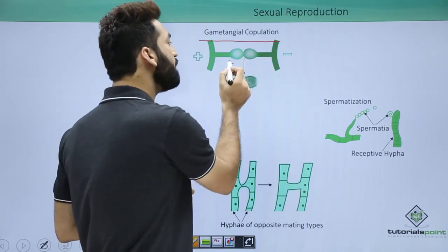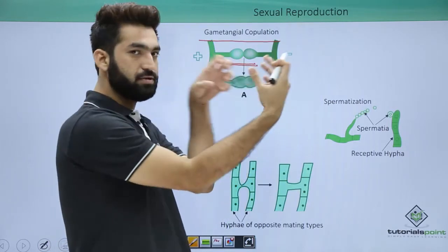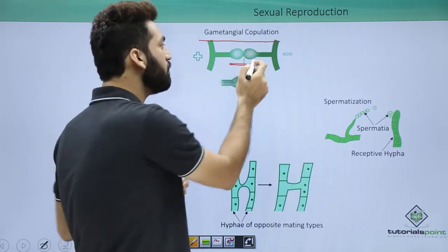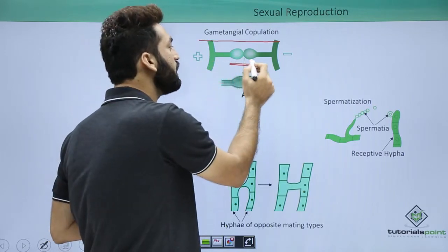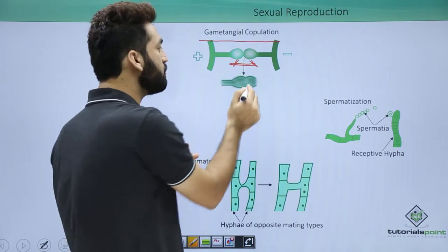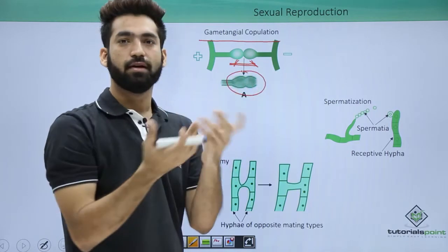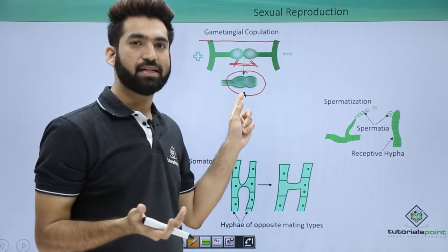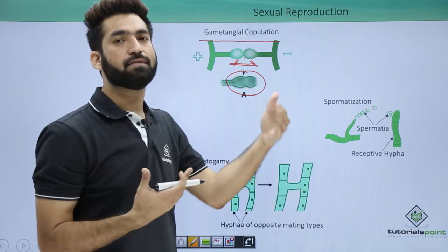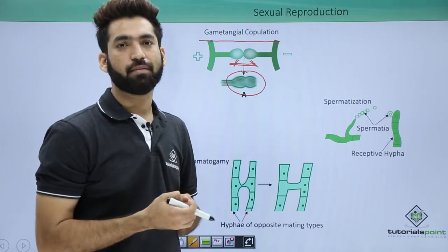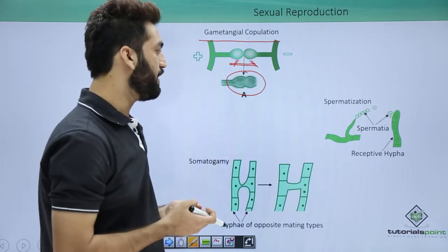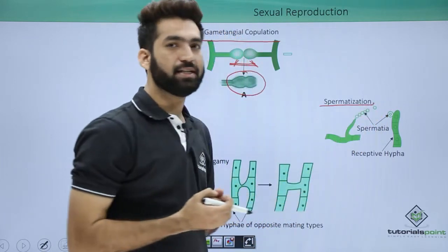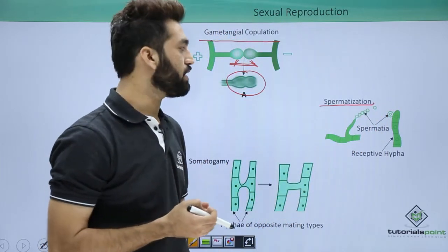The third method is called gametangial copulation. Both gametes come close together, and when they do, their walls get dissolved. As soon as the walls dissolve, plasmogamy occurs. Thereafter, karyogamy and meiosis follow.